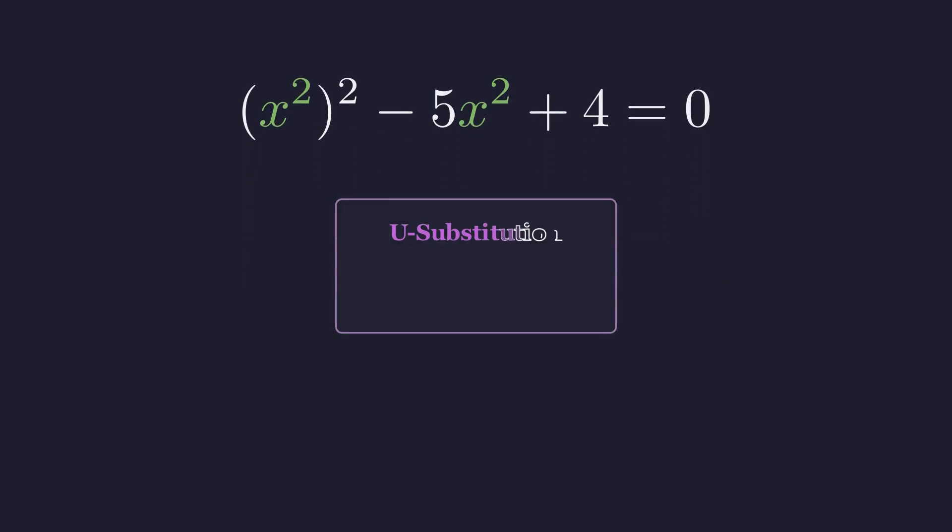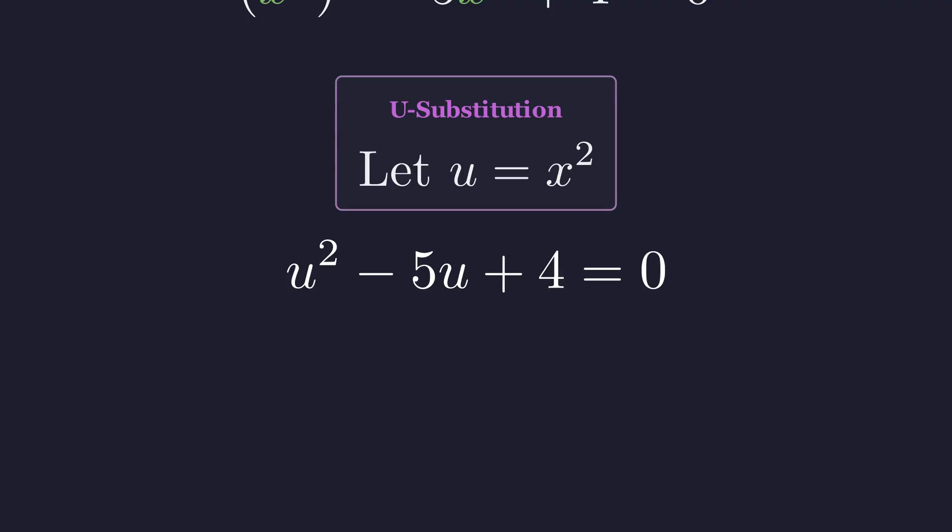Let's define a new variable u to represent x squared. This is called substitution, and it's going to make our lives much easier. Now replacing every x squared with u, we get u squared minus 5u plus 4 equals 0. This is just a standard quadratic.